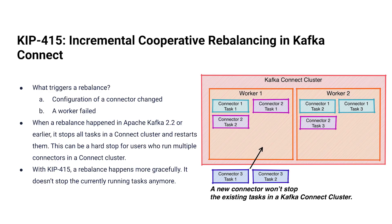Now let's take a look at Kafka Connect. The first Connect KIP is 451, incremental cooperative rebalancing. Historically, if you change the configuration of a connector it causes a rebalance across the cluster that stops all other running tasks. Now when Connect has to do a rebalance, it does it incrementally — it doesn't stop the world on all other connectors, only stopping activity it absolutely has to in order to service that part of the rebalance. This makes configuration changes a much more pleasant experience.